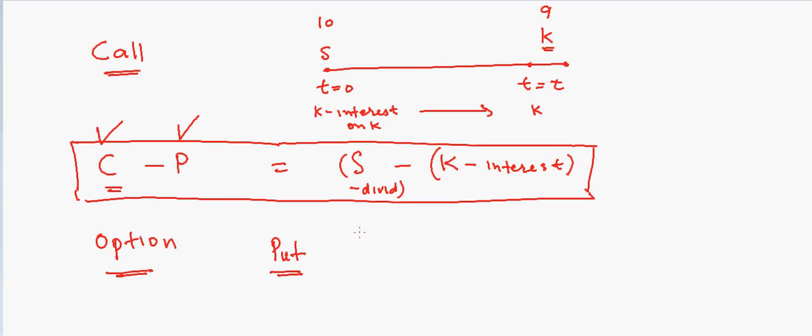And in that case we can also do this: get a call, sell a put, and then also sell stock, and that will be equal to minus K minus interest.